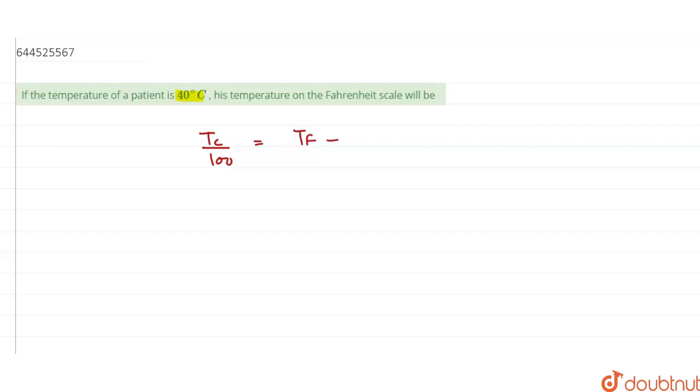After simplifying this equation, we will get TF equals 32 plus 1.8 TC. Now the value of TC is given in the question, which is 40 degrees Celsius.